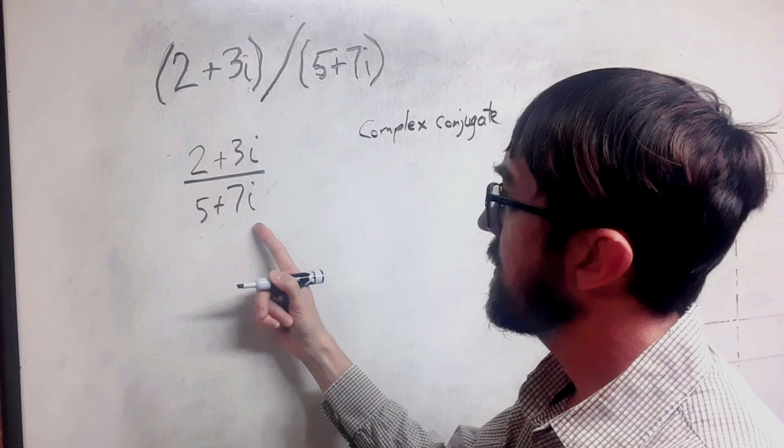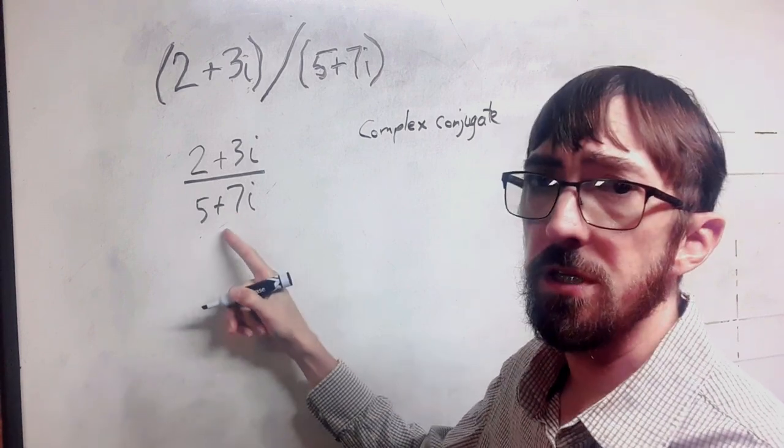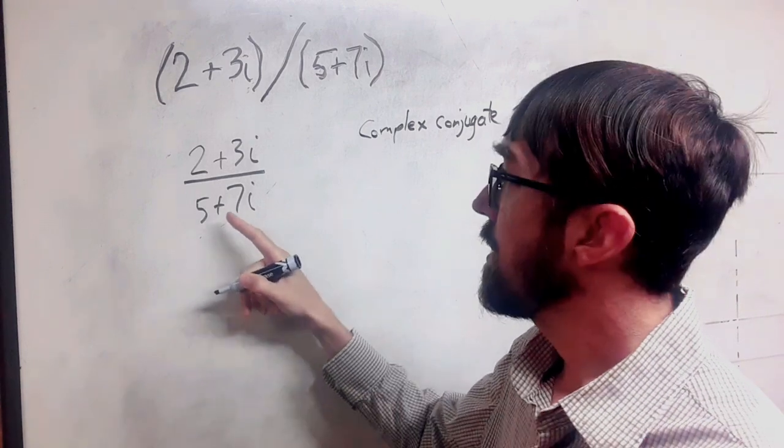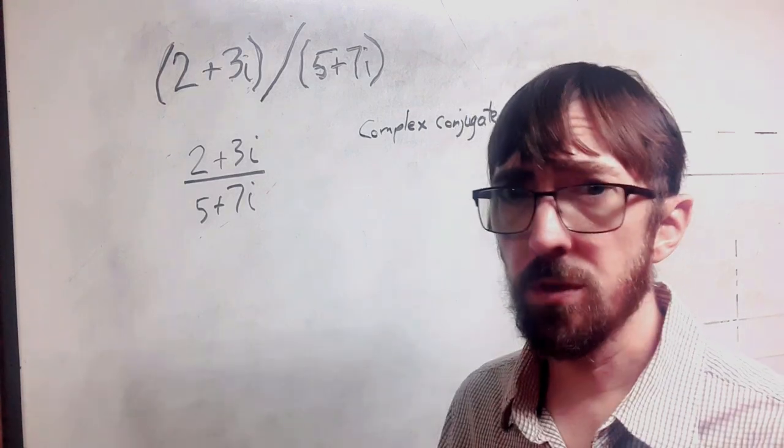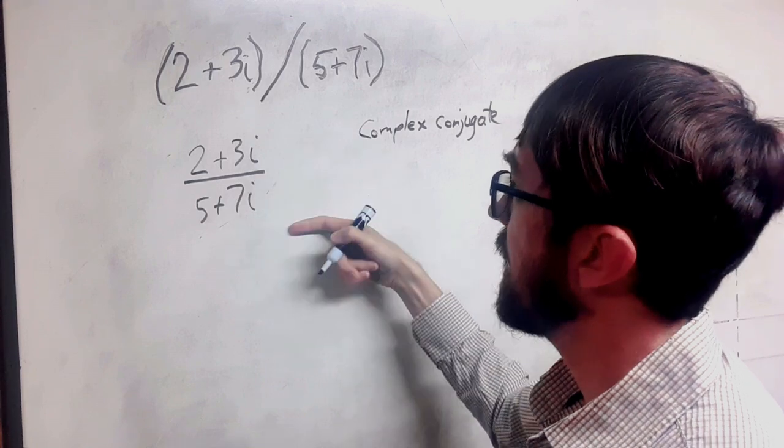And what that is, is I take this, and I just switch the middle sign. So if it's addition, I make it subtraction. If it's subtraction, I make it addition. And that's the only change that I make. And I'm going to multiply that top and bottom.